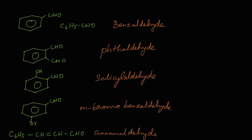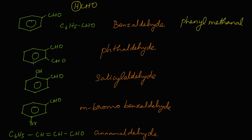Now let's give the IUPAC names for these aromatic structures. The simplest aldehyde is methanal (formaldehyde), where one hydrogen of methanal is replaced by a phenyl group. So benzaldehyde is known as phenylmethanal.